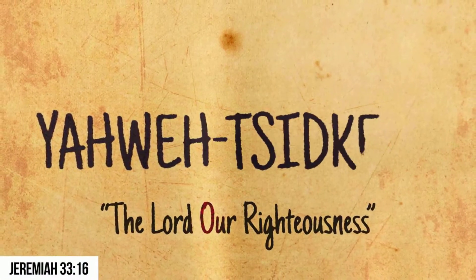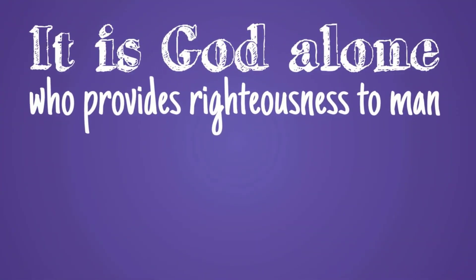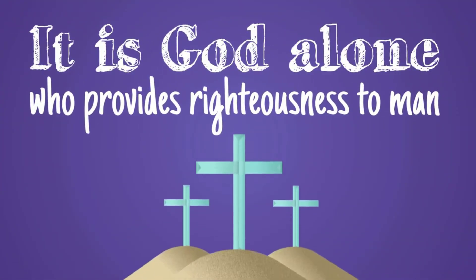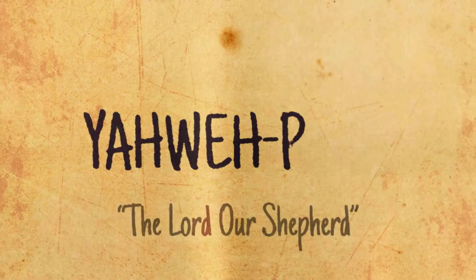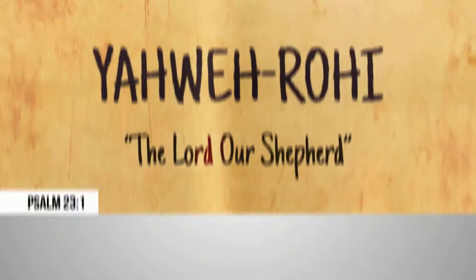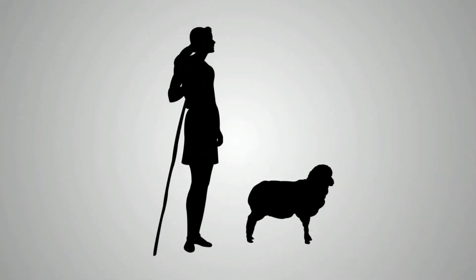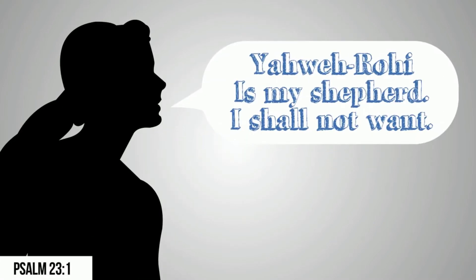Yahweh Tzidkenu — The Lord our righteousness. As with Yahweh Mekedesh, it is God alone who provides righteousness to man, ultimately in the person of his son, Jesus Christ, who became sin for us, that we might become the righteousness of God in him. Yahweh Rohi — The Lord our shepherd. After David pondered his relationship as a shepherd to his sheep, he realized that was exactly the relationship God had with him, and so he declares, "Yahweh Rohi is my shepherd, I shall not want."